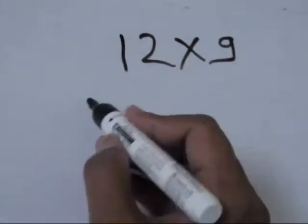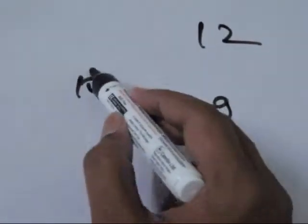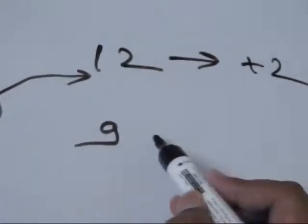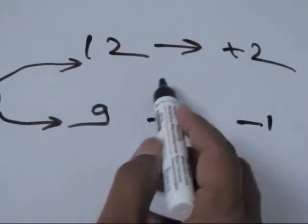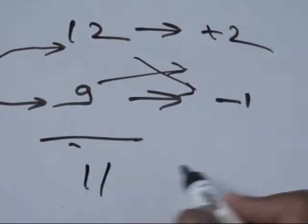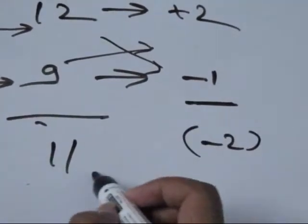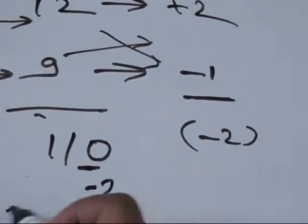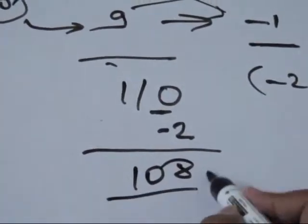Now see the example of twelve into nine. The nearest base is ten. How much is twelve away from ten? It is plus two. How much is nine away from ten? Nine is minus one. So the first step is add the corners — it will come as eleven. And the second step is multiply the two deviations: plus two into minus one is minus two. So first put zero and then minus two, then deduct it. So it will come as 108.